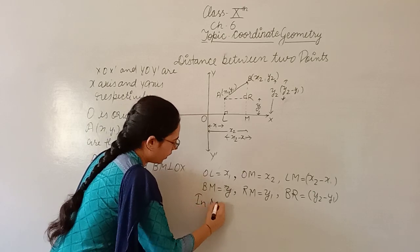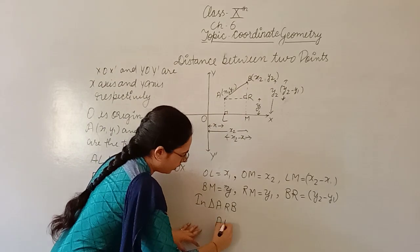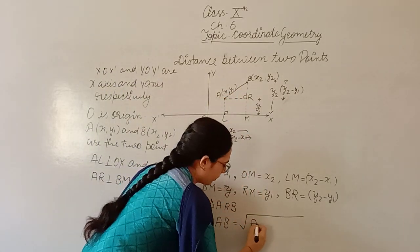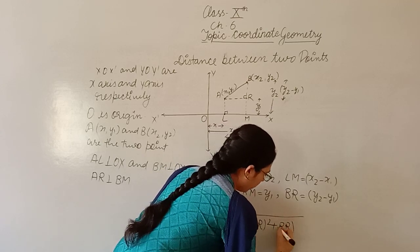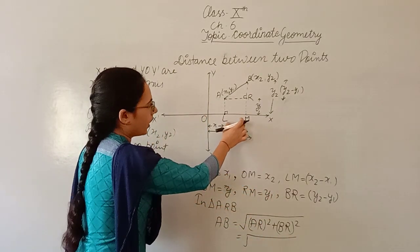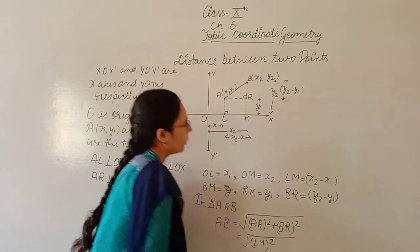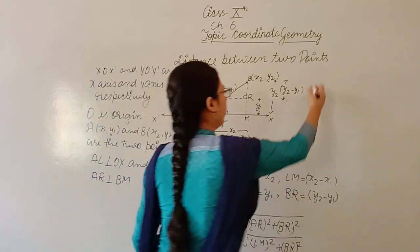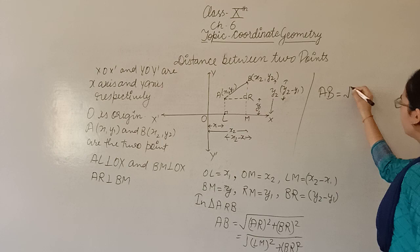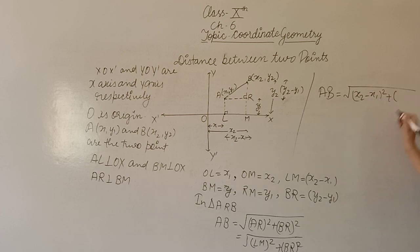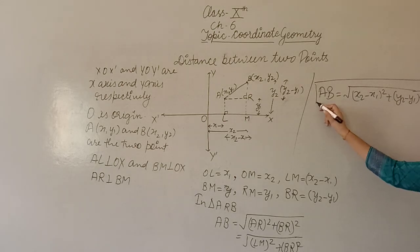By the Pythagorean theorem in triangle ARB, the distance AB = √(AR² + BR²). Substituting, AB = √((x2 - x1)² + (y2 - y1)²). This is the distance formula between two points. As a special case, if one point is the origin (0,0), the distance becomes √(x2² + y2²).